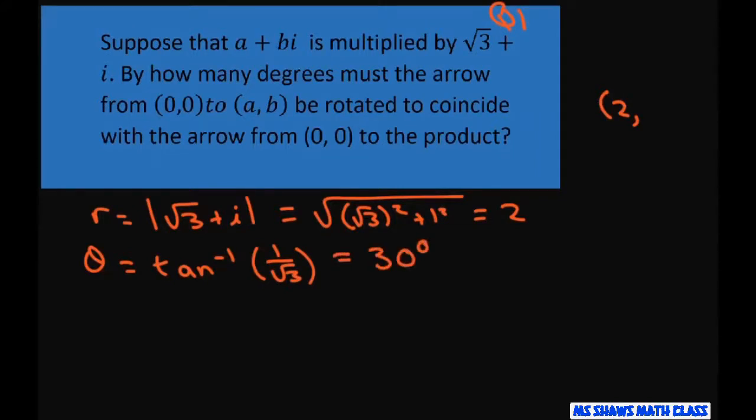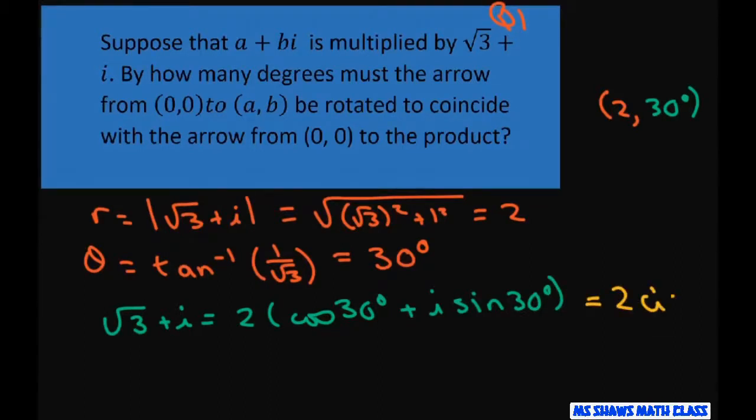So writing it out, that means this would be 30 degrees here. So we have square root of 3 plus i equals 2 times cosine of 30 degrees plus i sine of 30 degrees, which just equals 2 cis of 30 degrees.